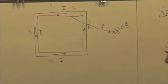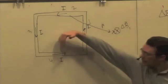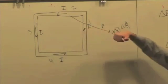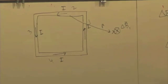What about for segment 3? Same thing, right? I cross R, thumb points out. And for 4, it's also going to be out.